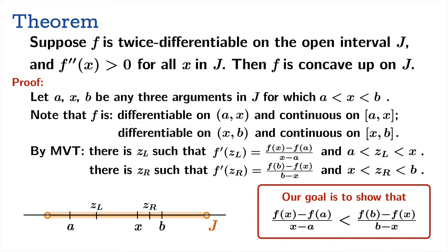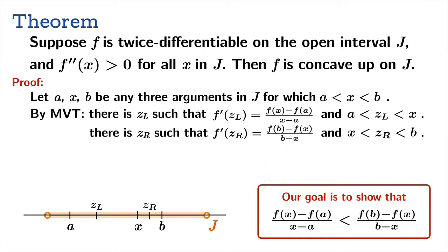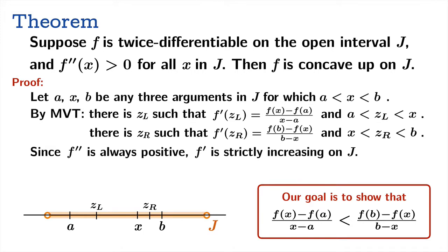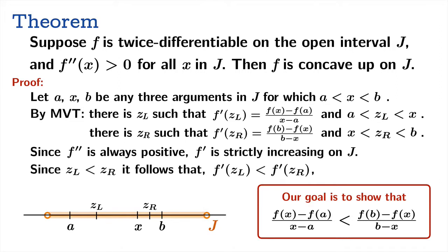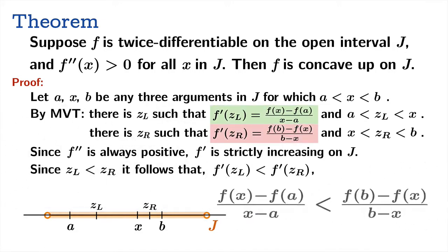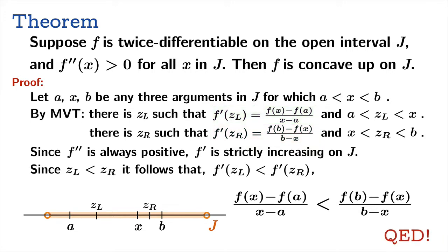Since f″ is positive — the hypothesis of the theorem — f′ is strictly increasing on J. Since f′ is strictly increasing and z_L < z_R, it follows that f′(z_L) < f′(z_R). But f′(z_L) is the left-hand secant slope and f′(z_R) is the right-hand secant slope, so we have proved exactly what we needed: the left-hand secant slope is smaller than the right-hand secant slope.